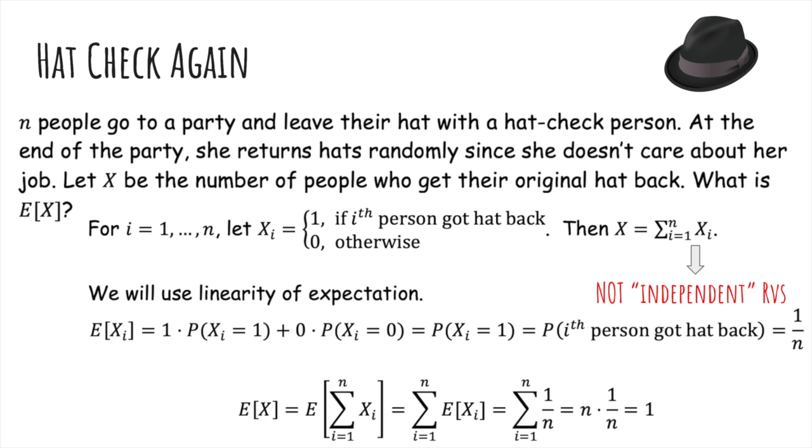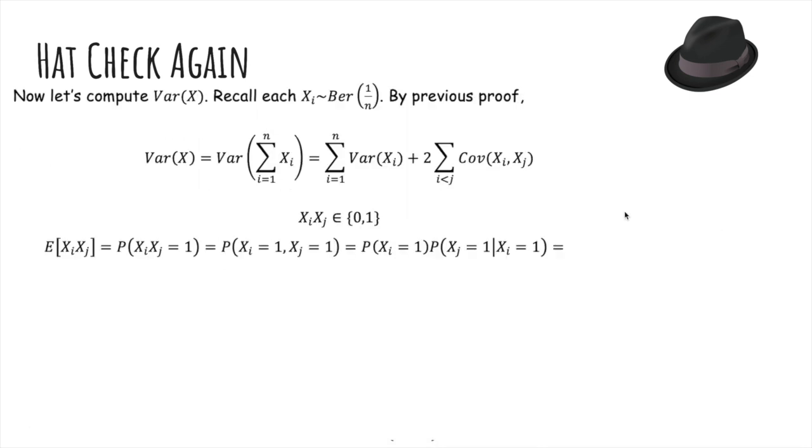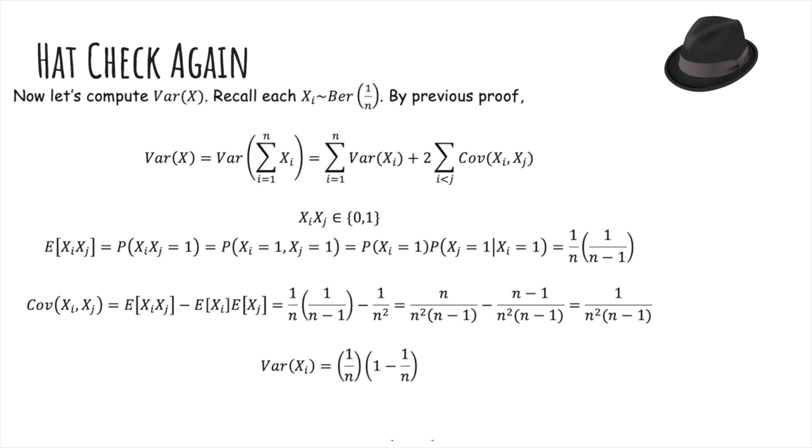And so what we're going to show here is that, remember the hat check problem? We showed that the expected number of people who get their hat back is 1. It actually turns out the variance of the number of people who get their hat back is also 1. I'm going to let you follow this because it's a bit messy algebra, but that's really cool.